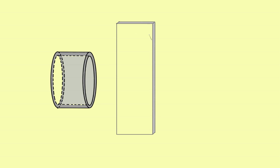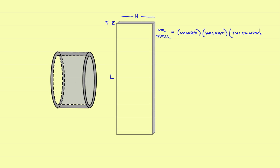This is a solid rectangular slab, and it's going to have a length, a width, and a height. This side right here will be the length. This is going to be the height, running from here to here. And then finally, it's going to have a thickness — we'll call it T. So it's got a length, a height, and a thickness. The volume of that shell is going to be exactly the same as the volume of the slab.